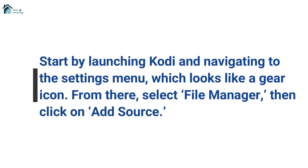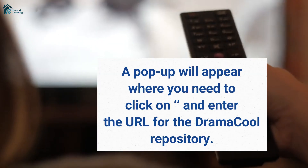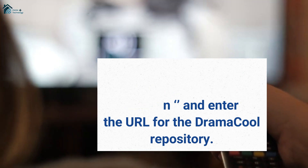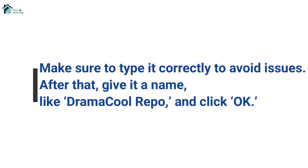Start by launching Kodi and navigating to the Settings menu, which looks like a gear icon. From there, select File Manager, then click on Add Source. A pop-up will appear where you need to enter the URL for the Dramacool repository. Make sure to type it correctly to avoid issues.